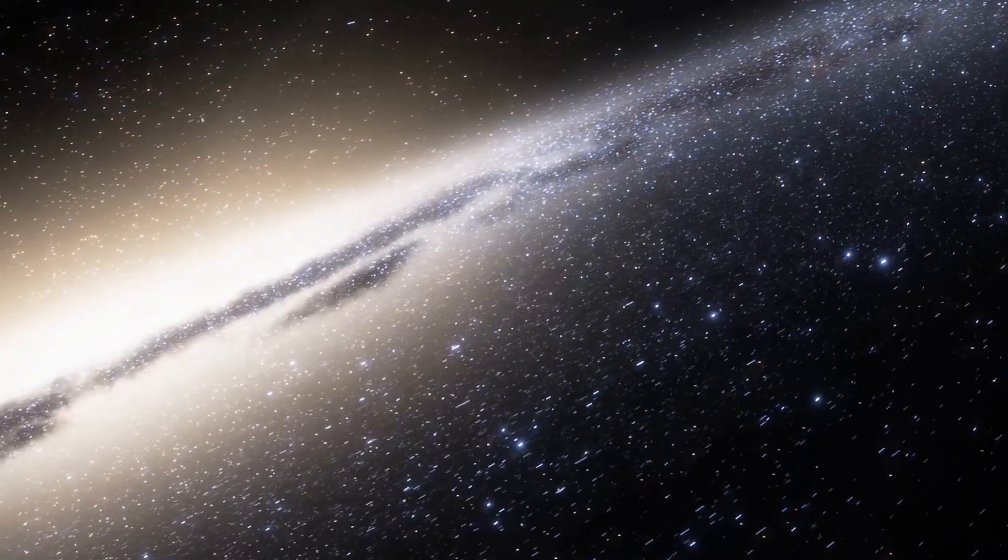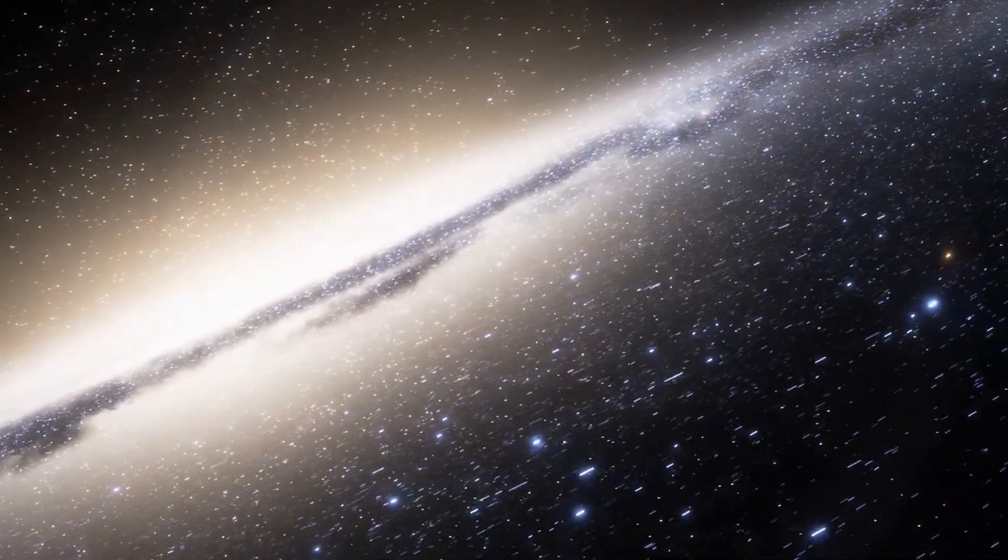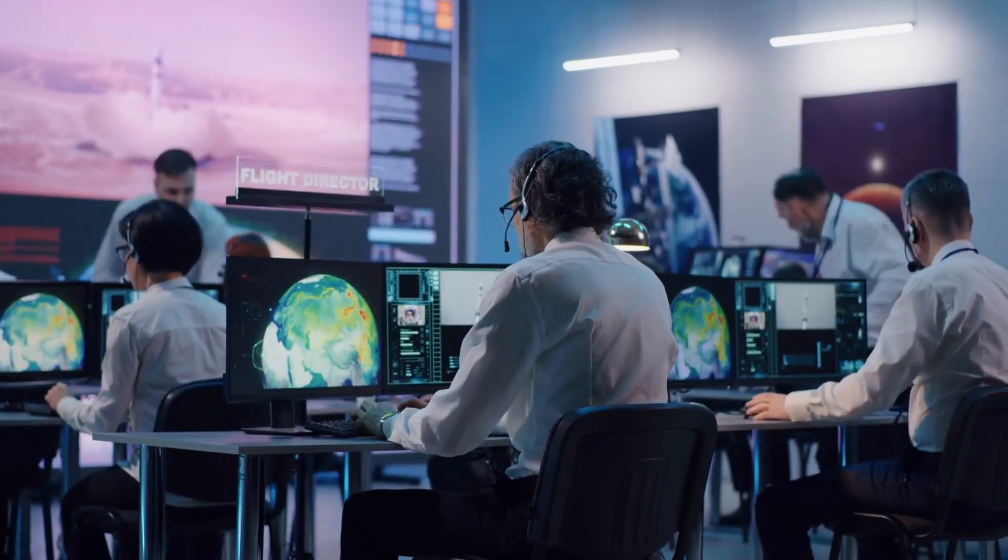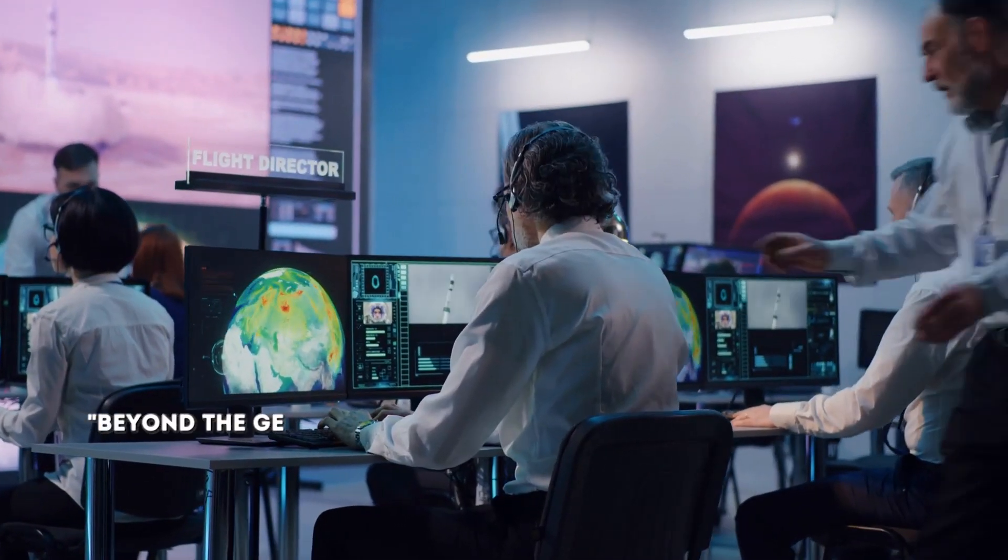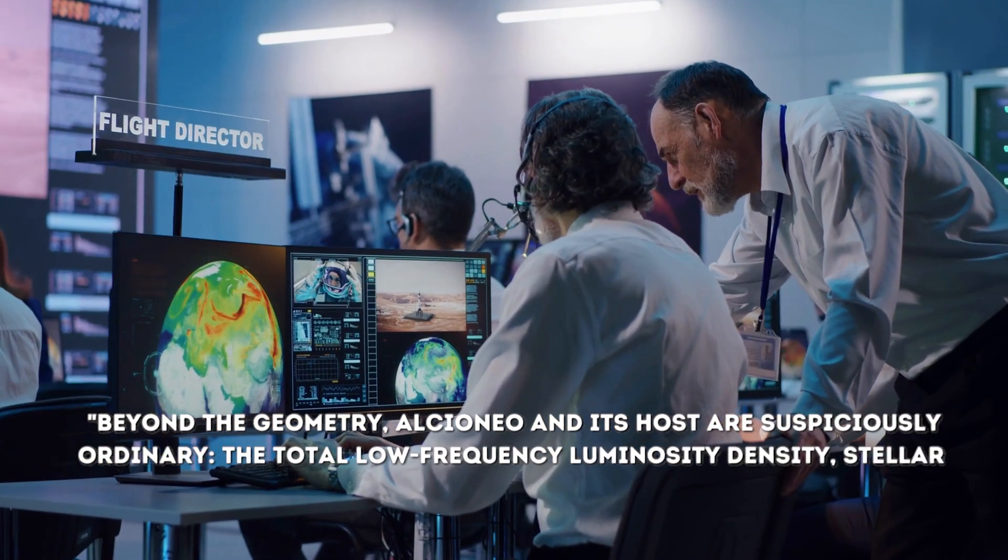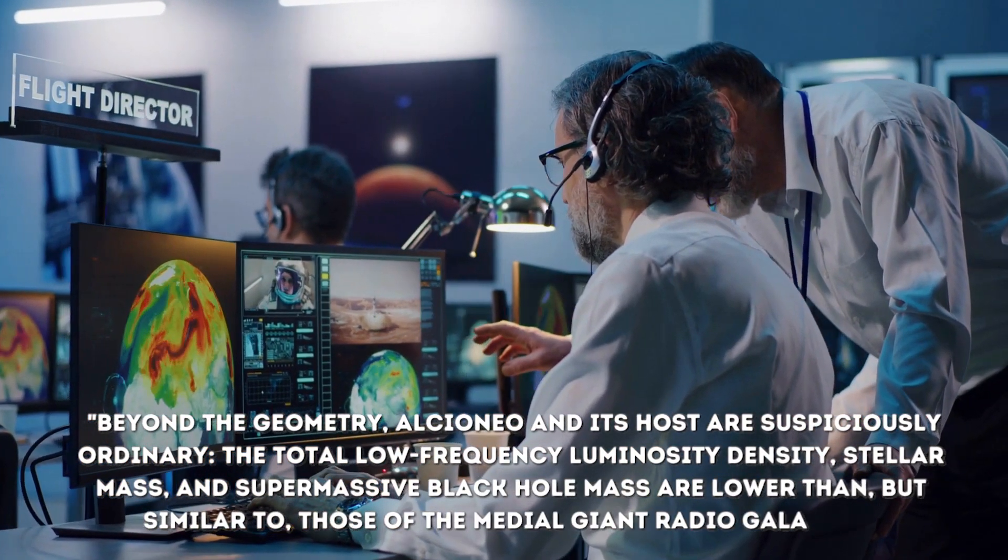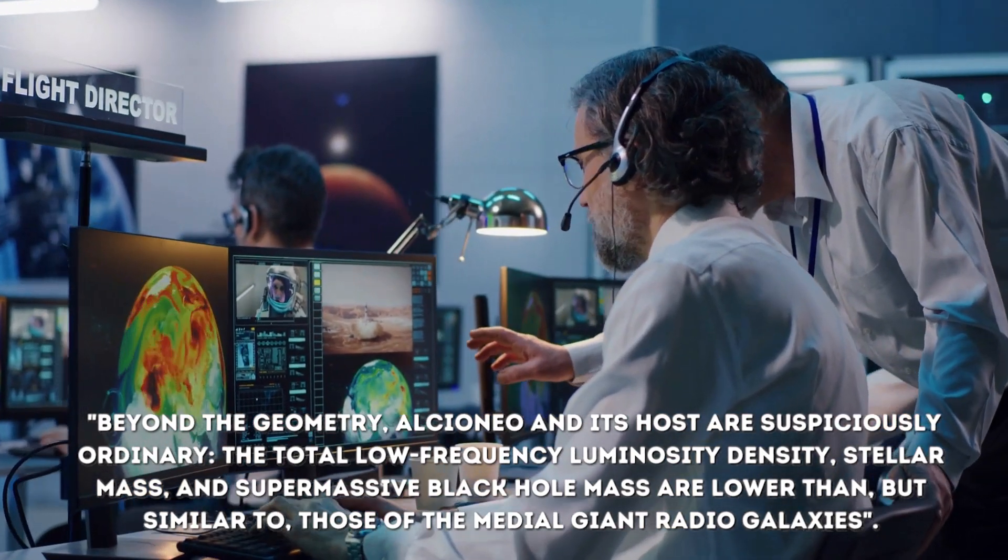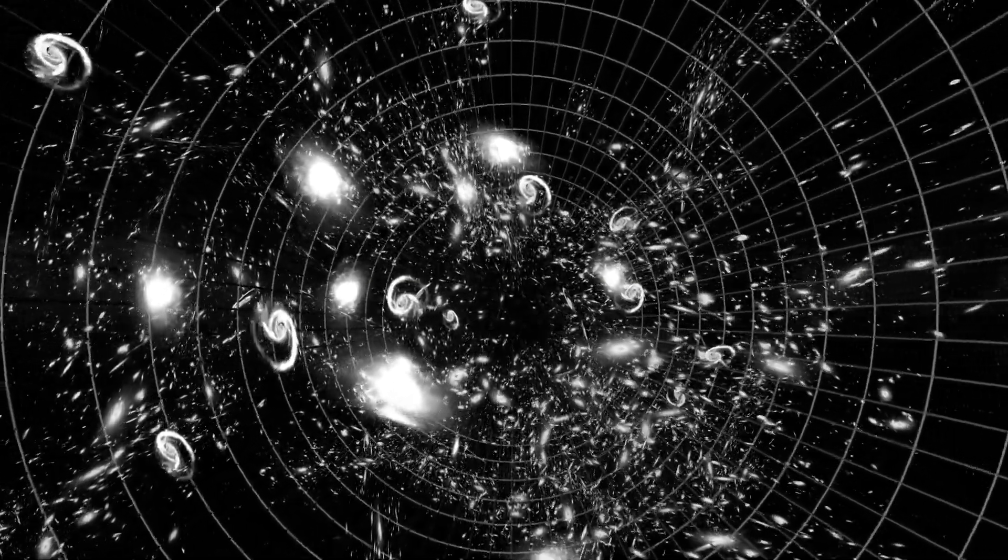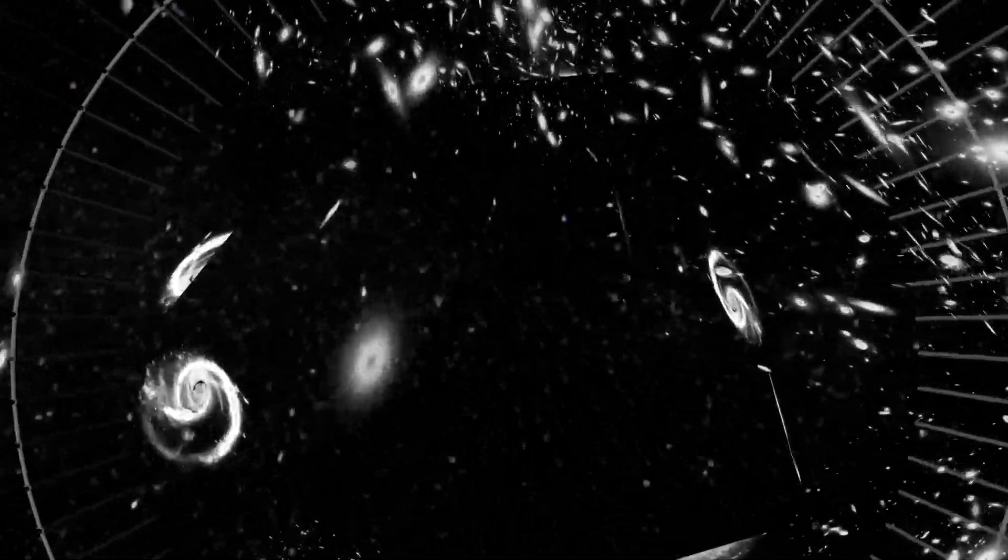In addition, astronomers have pointed out that this galaxy is in constant expansion. As a consequence, Alcinean is a region with a lower density than the average in which it is located. Scientists who are part of the group that found Alcinean commented that, beyond the geometry, Alcinean and its host are suspiciously ordinary. The total low frequency luminosity density, stellar mass, and supermassive black hole mass are lower than, but similar to, those of the median giant radio galaxies. Only time will dictate the fate or what we will be able to discover about this galaxy, which could hide in its imposing size some answers that will allow us to learn a little bit more about how our universe works and the cycles through which each goes through.